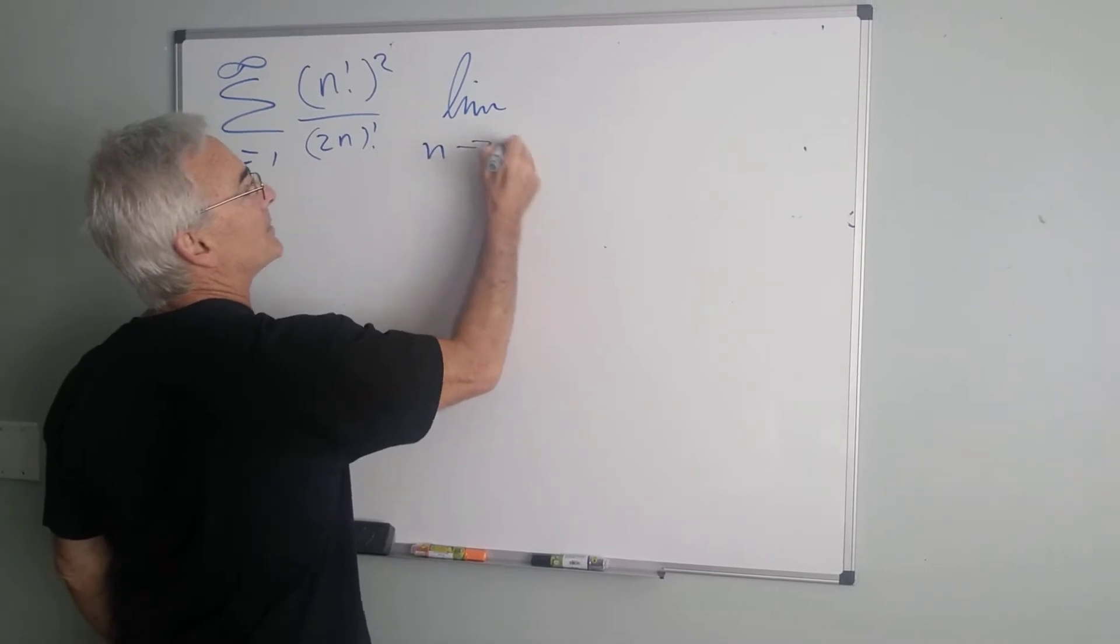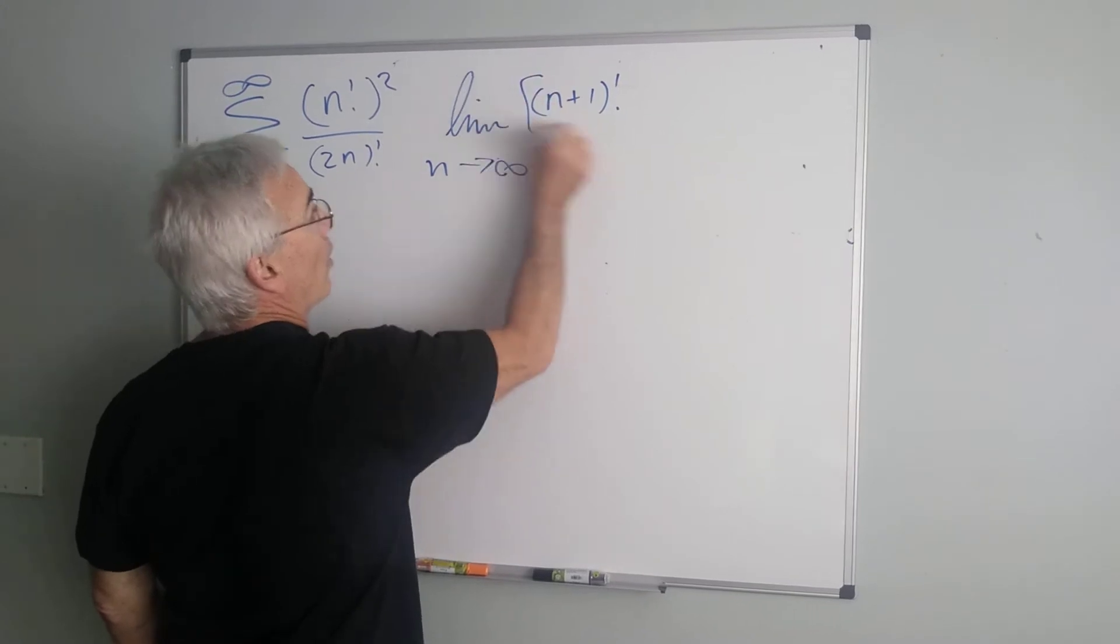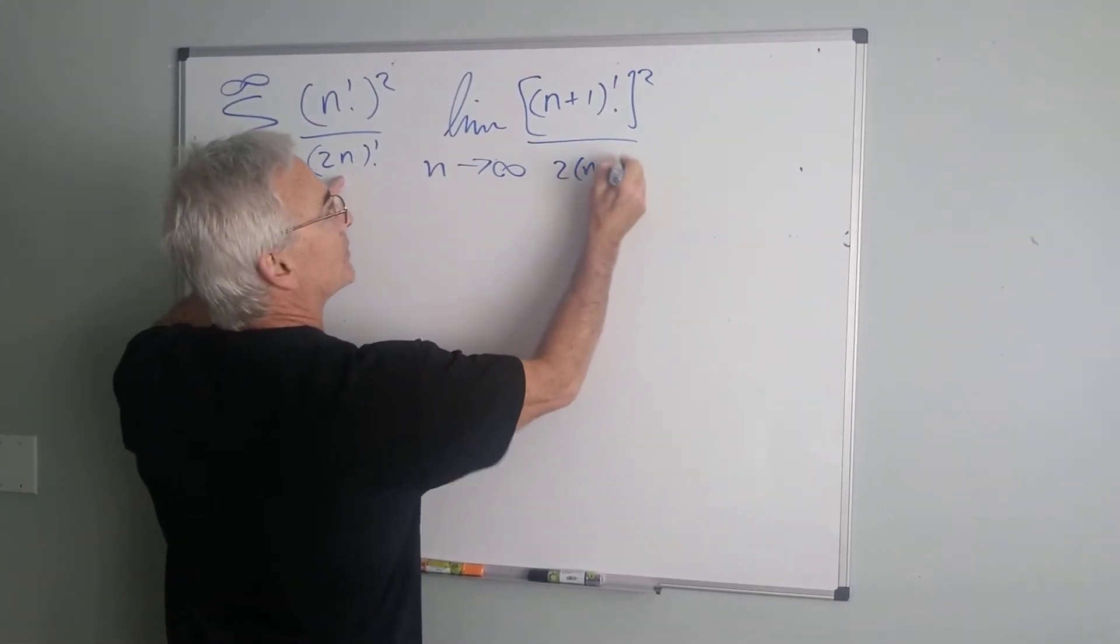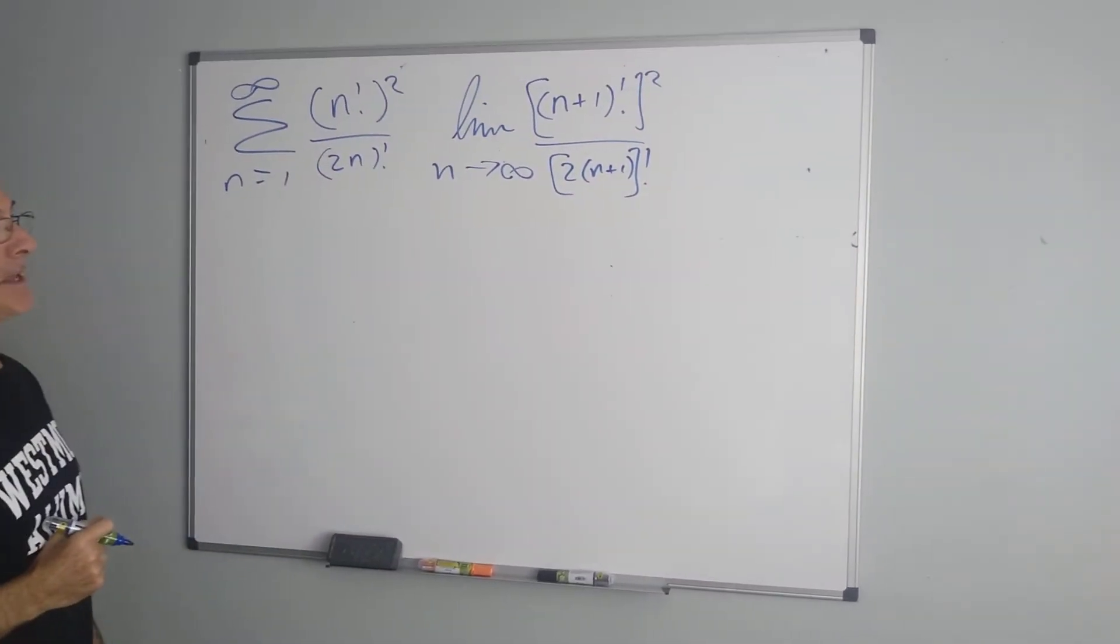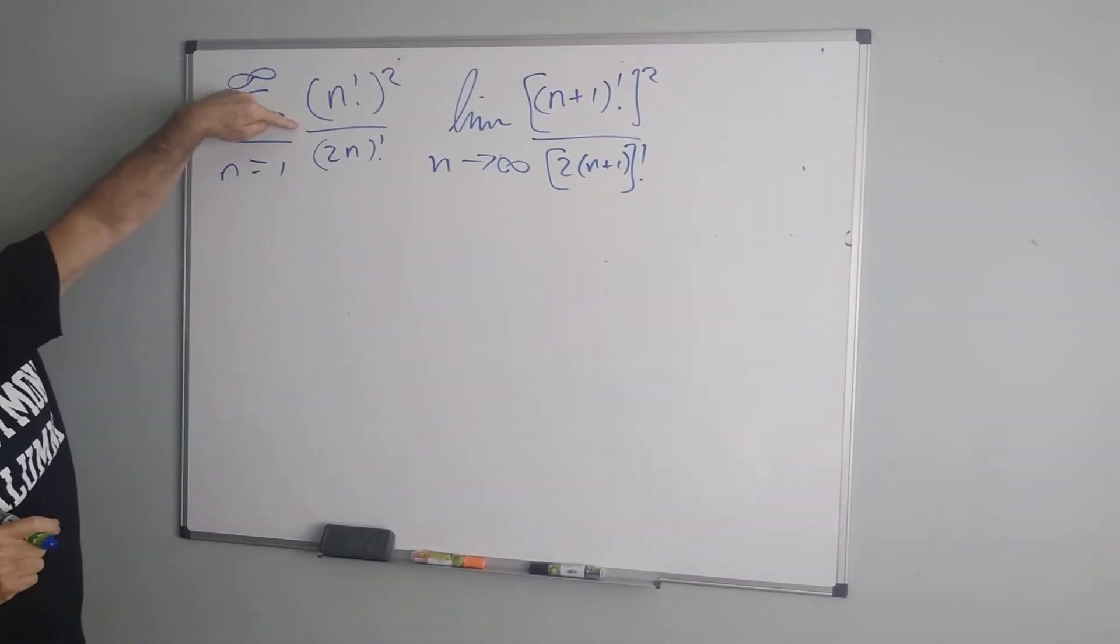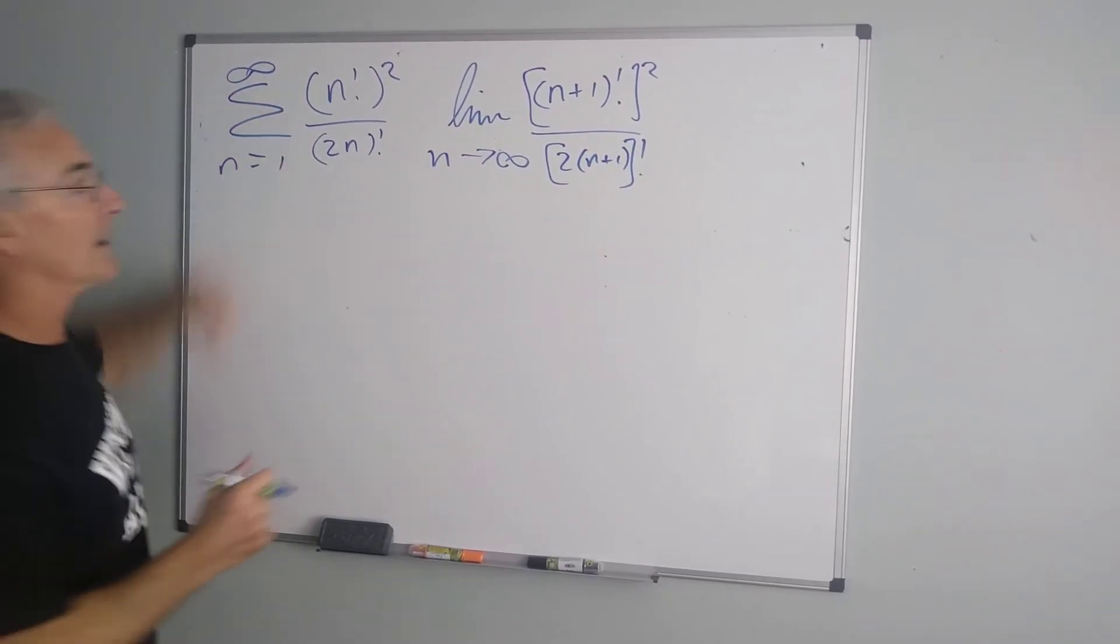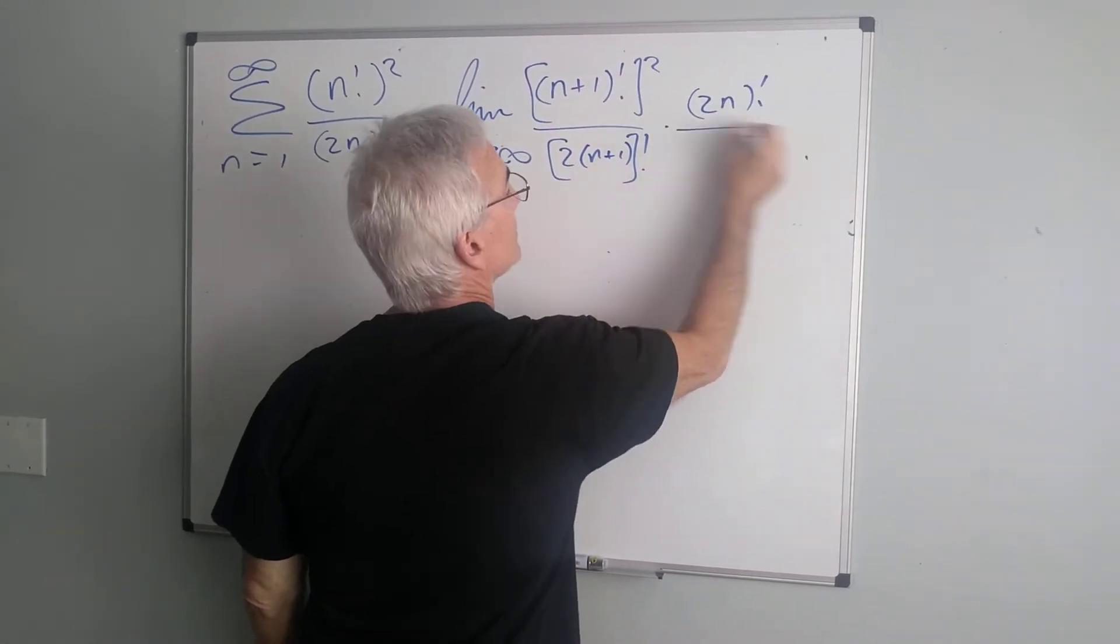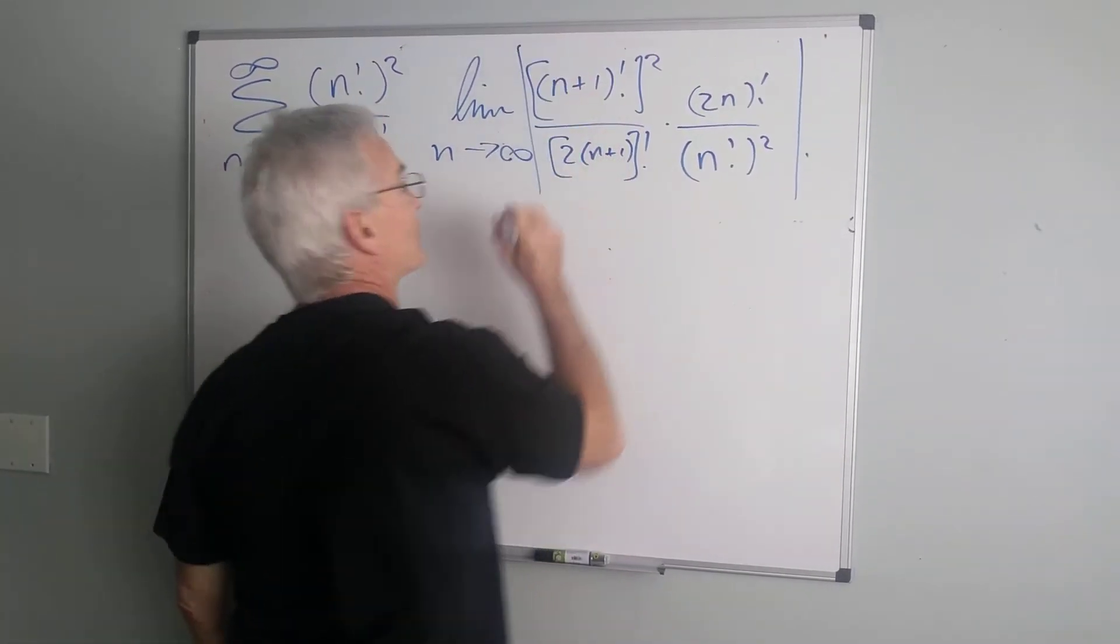So, we're looking at the limit of n plus 1 factorial, quantity squared, over 2 times n plus 1, the entire quantity, factorial. We're now going to divide it by this term, which is the nth term. So, for ease of calculation, we'll write it as multiplied by the reciprocal, all inside the absolute value.